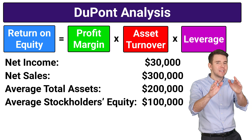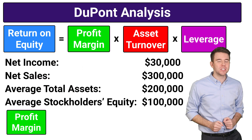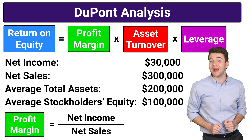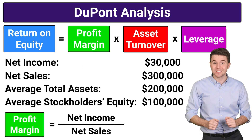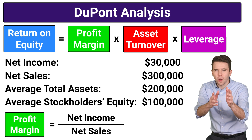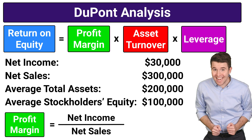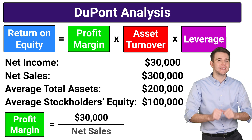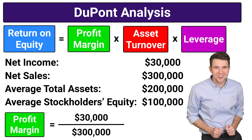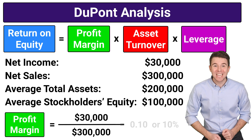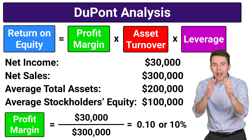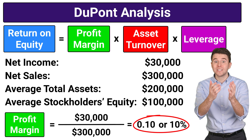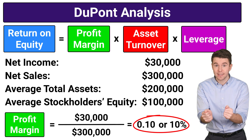First, profit margin is computed as net income divided by net sales. So we take net income of $30,000 and divide by net sales of $300,000, to get a profit margin of 0.1 or 10%.